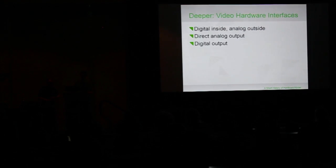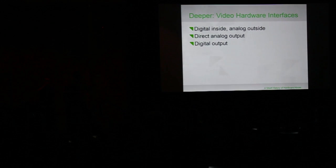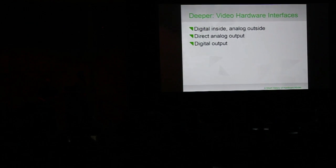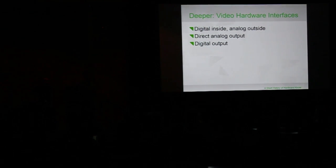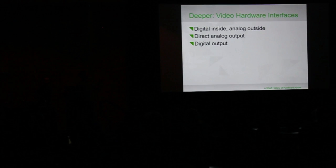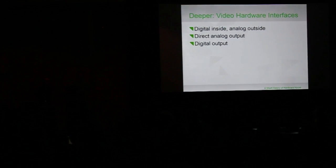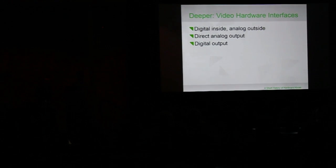Now we're going to move on to a different section about hardware interfaces. Broadly classified, you can look at it three different ways. What we're doing right now with this computer is outputting analog, but on the inside there's lots of digital processing. You could also have direct analog output — something along the lines of a TV output — or you could have direct digital output: HDMI, DVI.